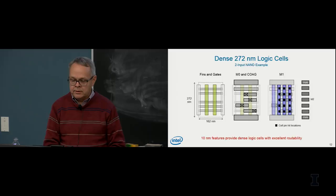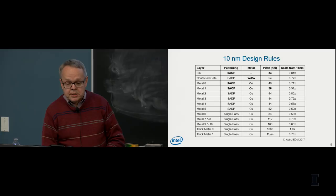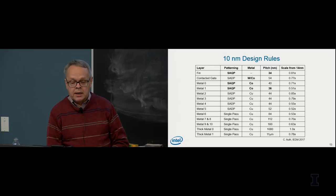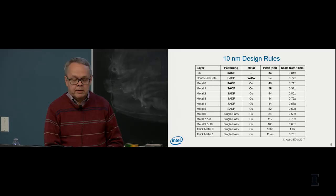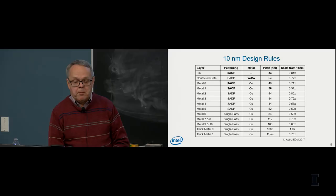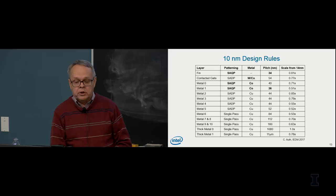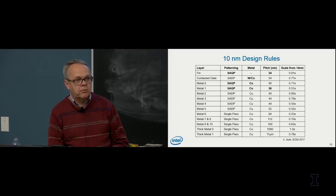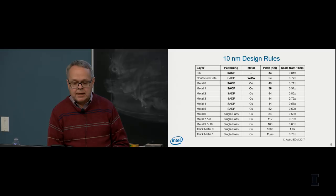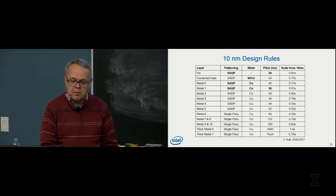This table summarizes the minimum pitches and design rules on key layers of the 10 nanometer technology, from the fin through the gate electrode down to the topmost thick metal layer. This is the first technology in our industry to use self-aligned quad patterning, effectively using 193 nanometer light to pattern fins with a pitch of 34 nanometers. Some other layers use self-aligned double patterning, but quad patterning gets us down to pitches like 34, 40, and 36 nanometers.